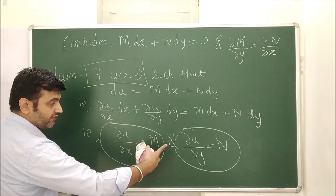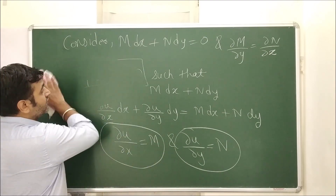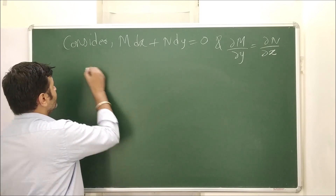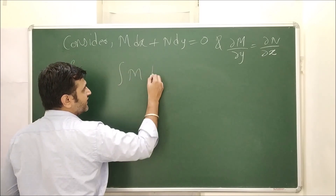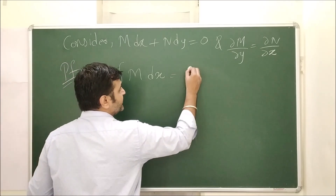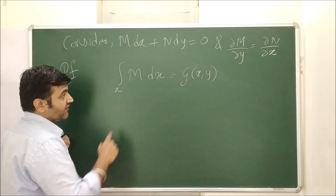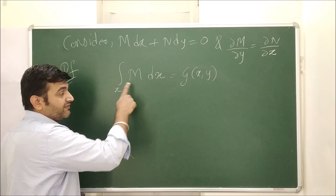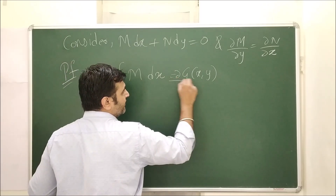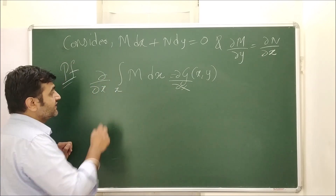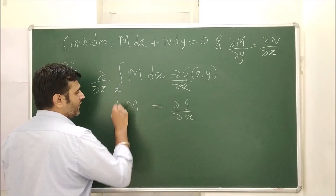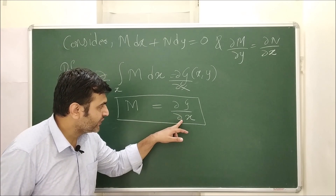So let's construct u. Since M is a continuous function of x and y, I can integrate M with respect to x — the integral exists because M is continuous. Let me call this g(x, y). Now differentiating both sides with respect to x: by the fundamental theorem of calculus, the derivative of the integral is the integrand, so ∂g/∂x = M.